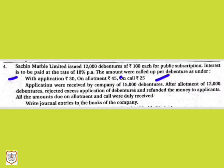The procedure and accounting entries for issuing debentures are similar to that of issue of shares. A prospectus is issued and the intending lenders apply for debentures on a prescribed form. The application money is deposited with the company. The company may require the amount to be paid in lump sum or by installments. The procedure followed is the same as in the case of shares — the difference lies only in the title or name of accounts.